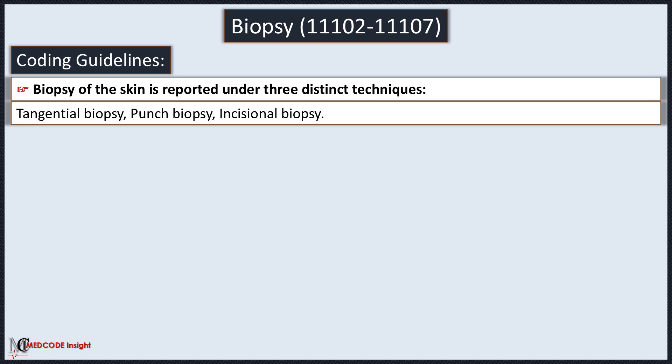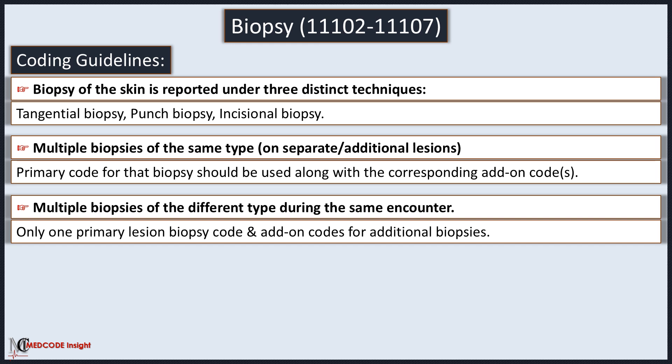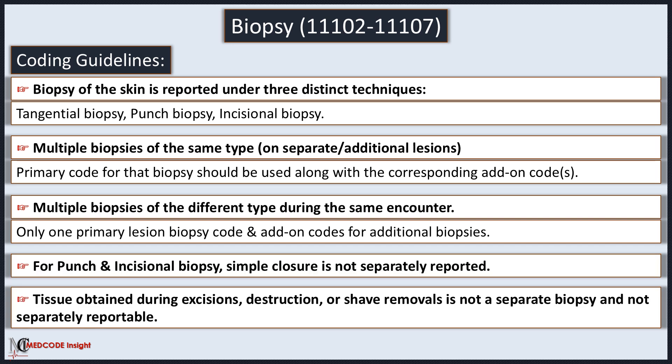Coding guidelines for biopsy of the skin: it is reported under three distinct techniques — tangential, punch, or incisional. If multiple biopsies of the same type are performed, the primary code for that biopsy should be used along with the corresponding add-on codes. When two or three different biopsy techniques are performed to sample separate or additional lesions, select the appropriate primary biopsy code plus an additional add-on code for each additional biopsy performed. For punch and incisional biopsy, simple closure is not separately reported. During surgical procedures such as excision, destruction, or shave removal, the removed tissue is often submitted for pathologic examination, but obtaining tissue during the course of these procedures is a routine component and is not separately reported as a biopsy.